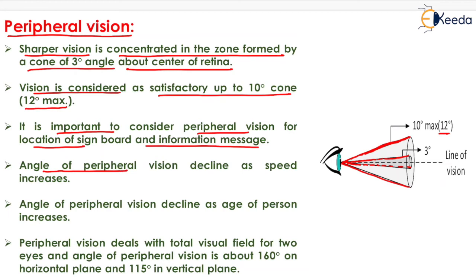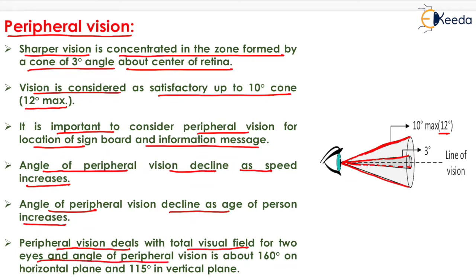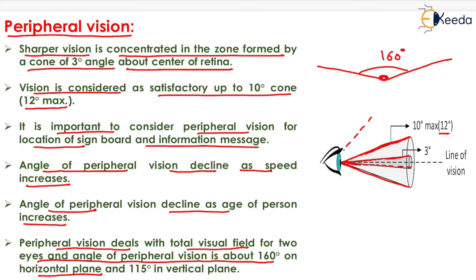The angle of peripheral vision declines as the speed of the vehicle increases, and also declines as the age of the person increases. Peripheral vision deals with the total visual field for both eyes; the angle of peripheral vision is about 160 degrees on the horizontal plane and limited to 115 degrees on the vertical plane.